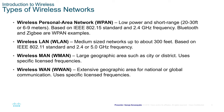WPAN, the Wireless Personal Area Network, is a low-power and short-range network of about 20 to 30 feet or 6 to 9 meters. It is based on the IEEE 802.15 standard and uses the 2.4 GHz frequency. Bluetooth devices, for example, use WPAN technology.